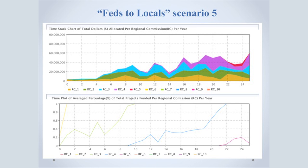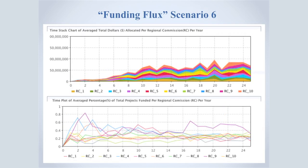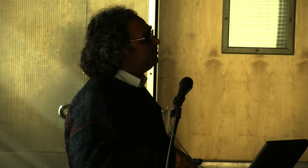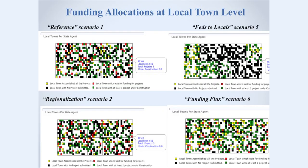There are also funding flux scenarios and sequestration scenarios — when government funding comes down because of sequestration effects, what happens in terms of which towns get funding. The model can essentially run an enormous number of scenarios, and we are pitching this model as a decision support system where policy makers and decision makers can run it to see that if they want to change the institutional rule from one to another, what the outcome would be.